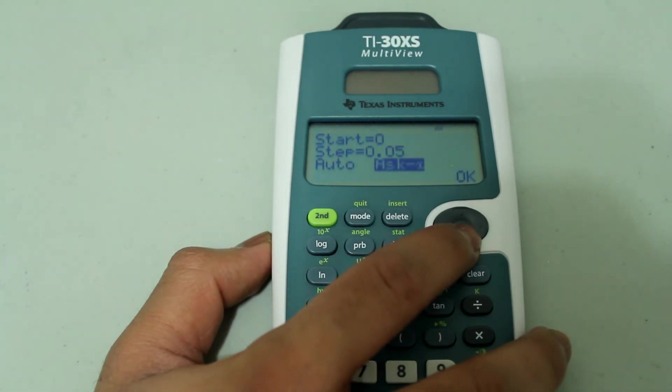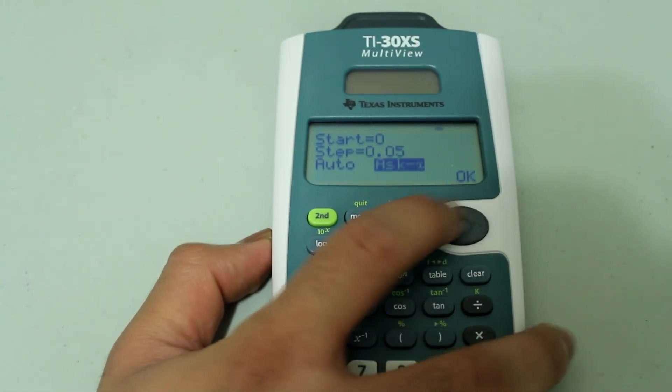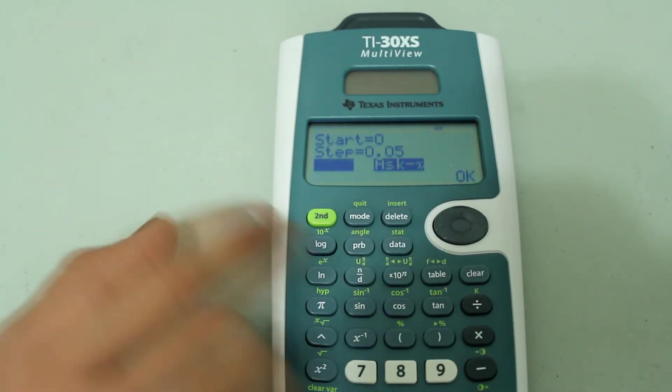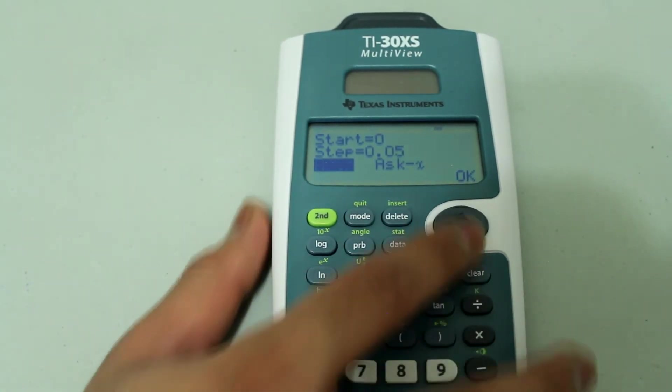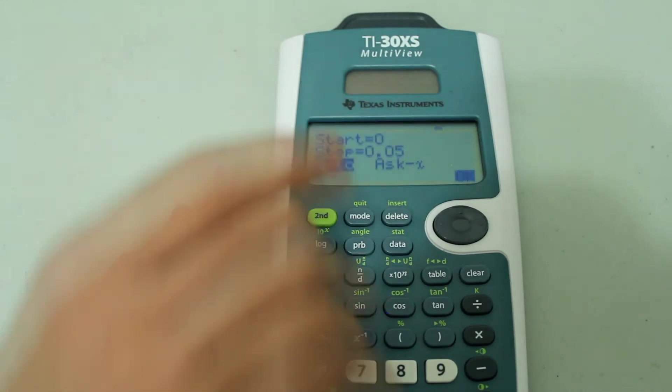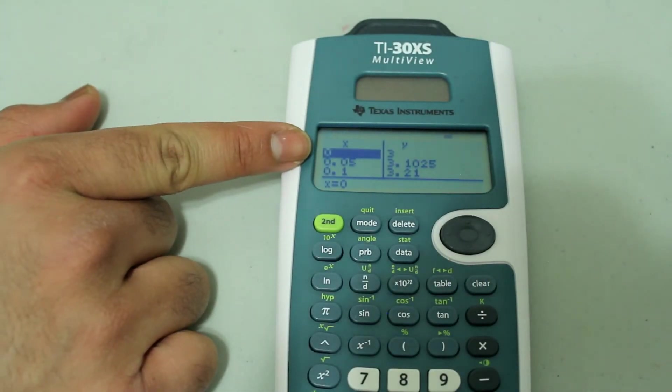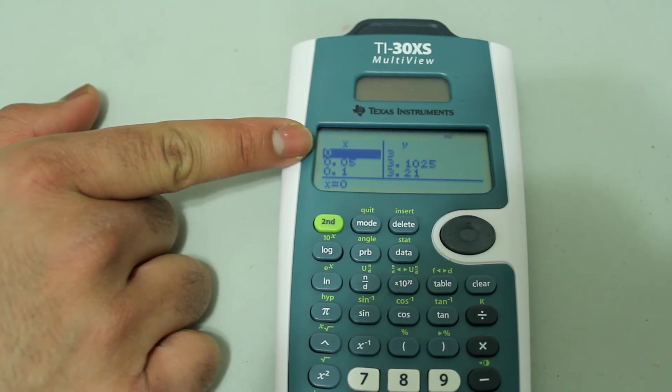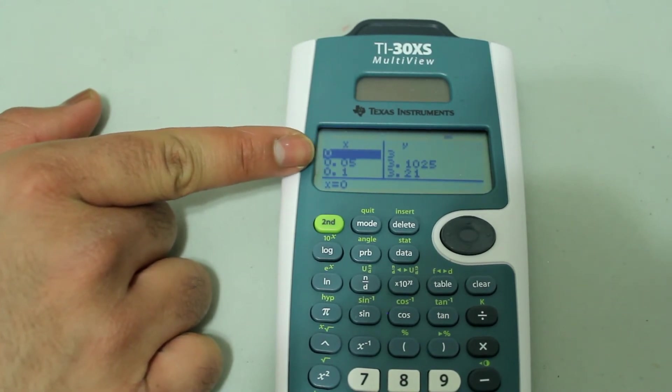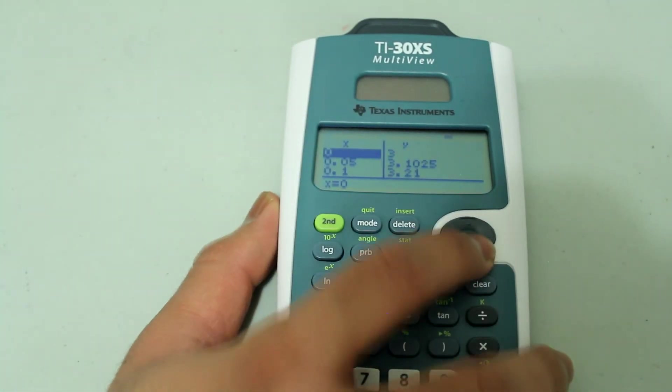I'm going to arrow down. Now, I'm going to have this on auto for now. I'm going to arrow down and press OK. Notice that the table starts at x equals 0 and the x values go up by 0.05.